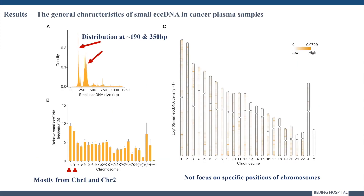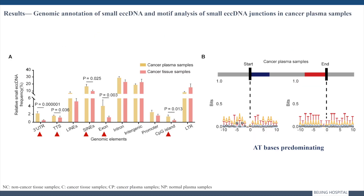Unlike the tissue samples, the ECC-DNA profile in plasma shows a different distribution at 190 base pairs and 315 base pairs. Moreover, small ECC-DNAs in plasma were mostly from chromosomes 1 and 2 without positional preference. By comparing the genomic components of plasma ECC-DNA with tissue samples, we found the proportion of some elements such as 3' UTR, exons, and CpG islands to be significantly different, but the motif sequences were consistent with tissue samples, having AT-base preference.